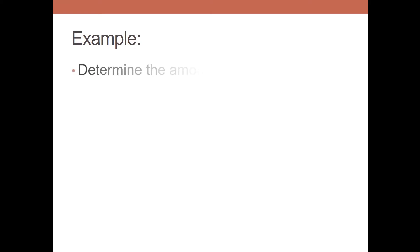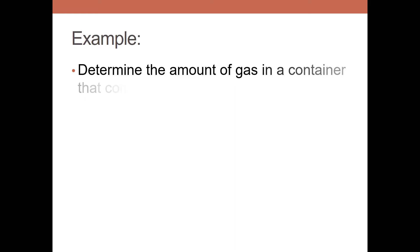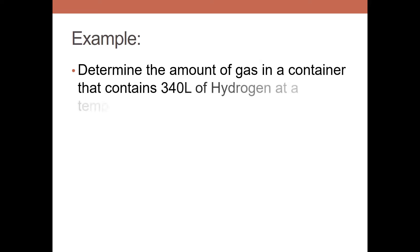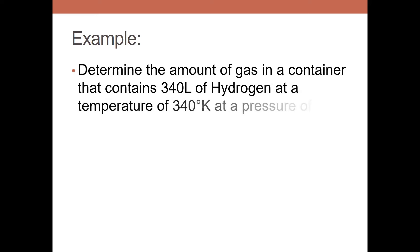Let's go through an example of using the ideal gas law with the ideal gas constant. The example: determine the amount of gas in a container that contains 340 liters of hydrogen at a temperature of 340 degrees Kelvin and a pressure of 0.75 atmospheres.